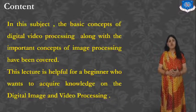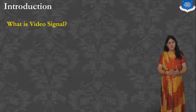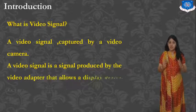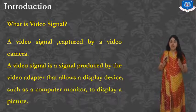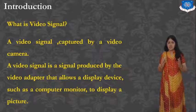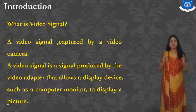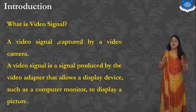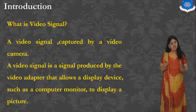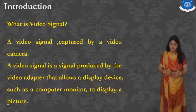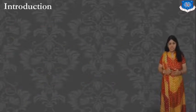Very first, what is about the Video Signal? The question is: what is a Video Signal? A Video Signal is captured by a Video Camera. It is a signal produced by the Video Adapter which allows a Display Device such as the Computer Monitor to display a Picture.